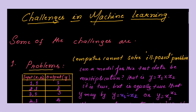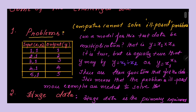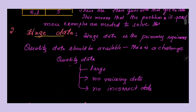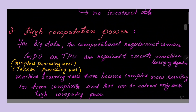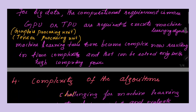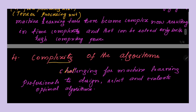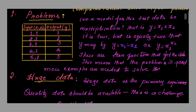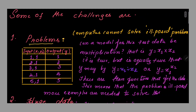Some of the challenges in machine learning: the first is problems, the second challenge is huge data, the third one is high computation power, and the fourth one is complexity of the algorithm. These are the four main challenges in machine learning.